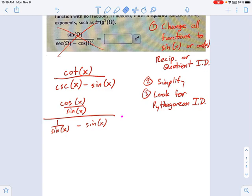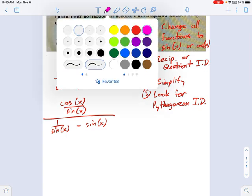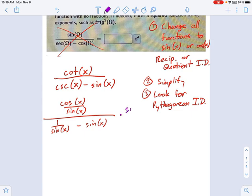So I'm going to multiply by sine over sine. Sine x over sine x, and that should clear all my denominators nicely.